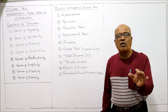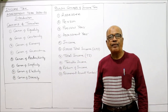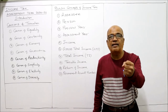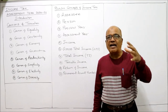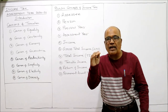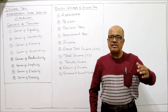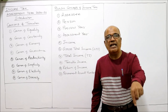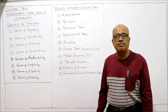The first canon is the canon of equality. Taxes should not be equal for everyone but should be based on the ability to pay. A high rate of tax should be imposed on rich people and a low tax rate on poor people. When a person has more ability to pay, more tax should be applied; when a person has less ability, less tax should be applied. This is the canon of equality.